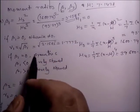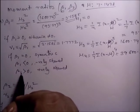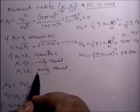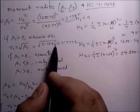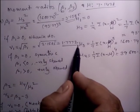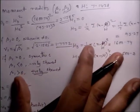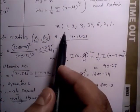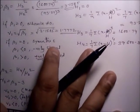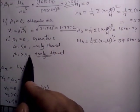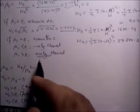Since gamma_1 is a positive value, it is nothing but a positively skewed distribution. This particular data x is positively skewed because gamma_1 is greater than 0 — the value is 1.7772.